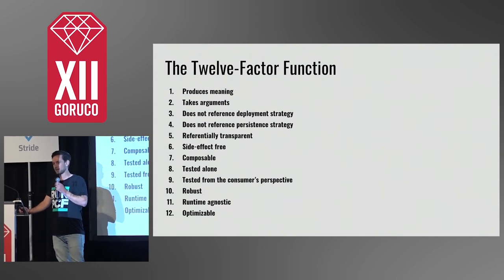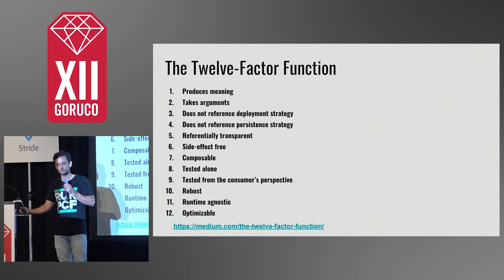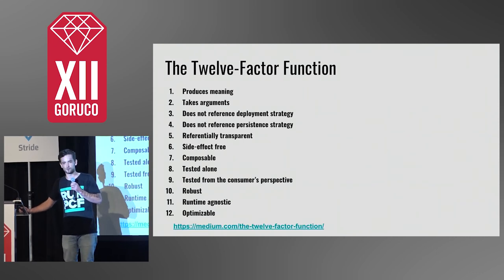So there you go, that's the 12-factor function. If you'd like to hear about the other eight constraints or see a more robust example, you can find it here. Thank you.